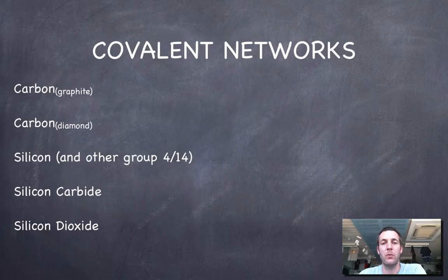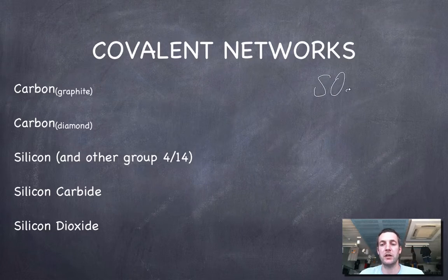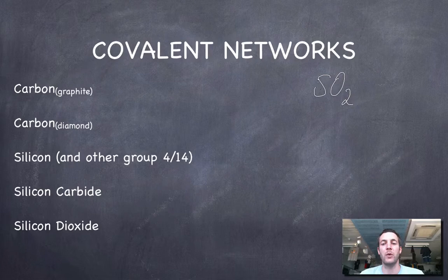Covalent networks - what are they compared to covalent molecules? If I was talking about a covalent molecule like sulfur dioxide, any molecule of SO2 that I come across will always have one sulfur and two oxygens in it.